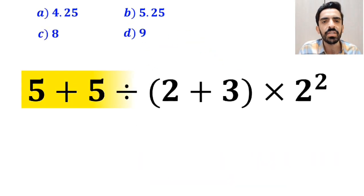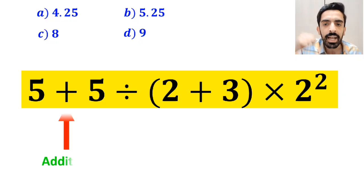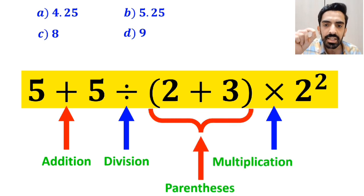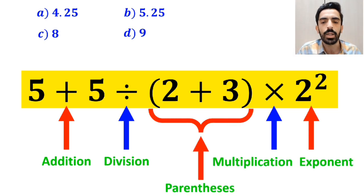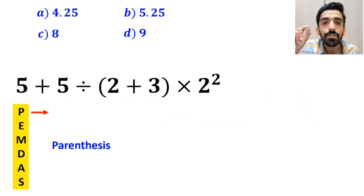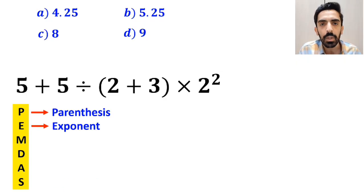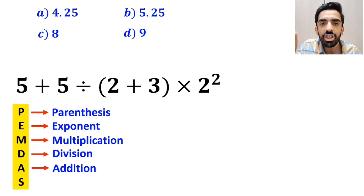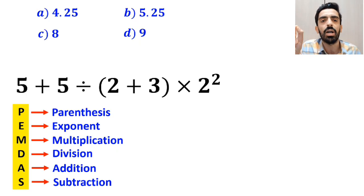Now, let me show you how to solve this expression properly. As you can see in the image, in this expression, first we have an addition sign, then a division sign, followed by parentheses, then a multiplication sign, and finally an exponent. To solve this problem, we must follow the PEMDAS rule. In this rule, P stands for parentheses, E stands for exponent, M stands for multiplication, D stands for division, A stands for addition, and S stands for subtraction.